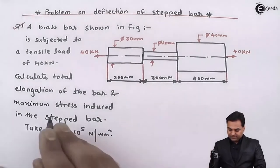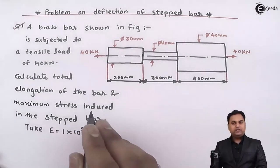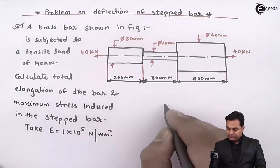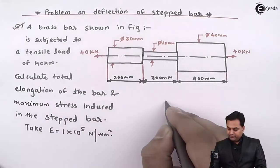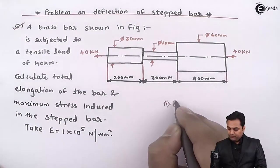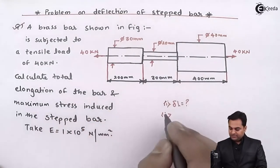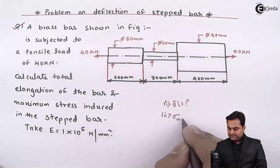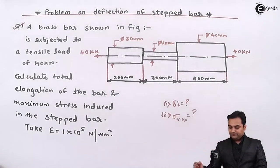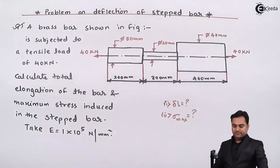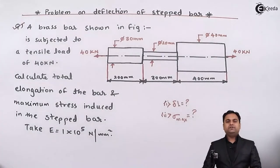We are asked to calculate the total elongation of the bar, which I'll denote as delta L, and the maximum stress induced, which I'll denote as sigma max. These are the two quantities we need to find. Now let us try to get the solution for this problem.